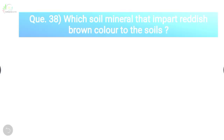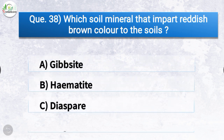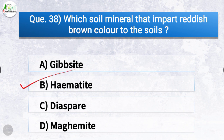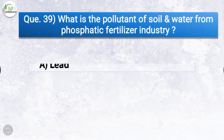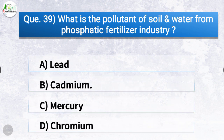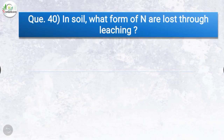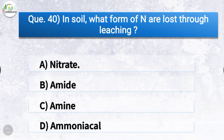Question number thirty-eight: which soil mineral imparts reddish-brown color to the soil? The correct answer is option B, hematite. Question number thirty-nine: what is the pollutant of soil and water from the phosphatic fertilizer industry? The correct answer is option B, cadmium. Question number forty: in soil, what form of nitrogen is lost through leaching? The correct answer is option A, nitrate.